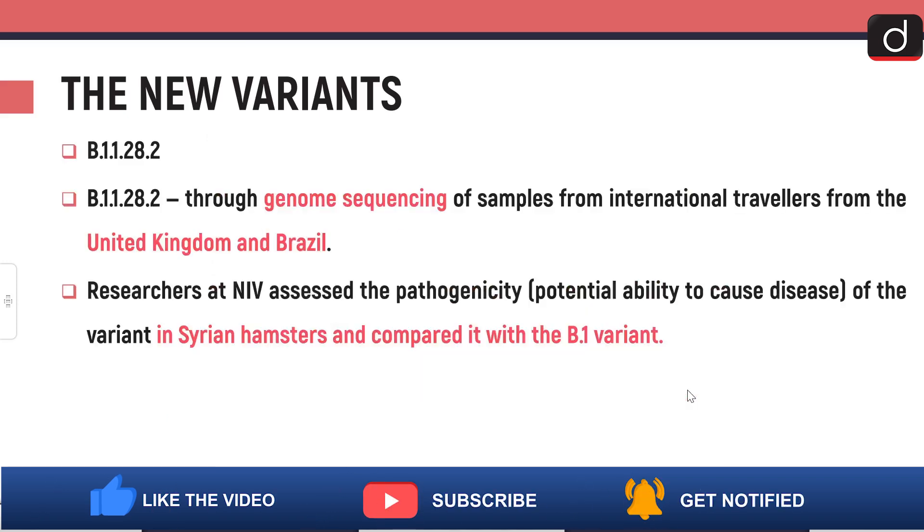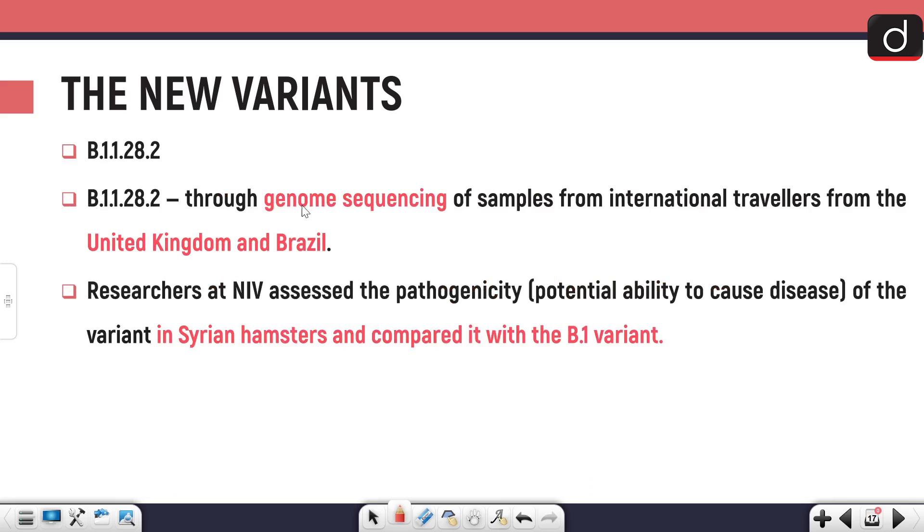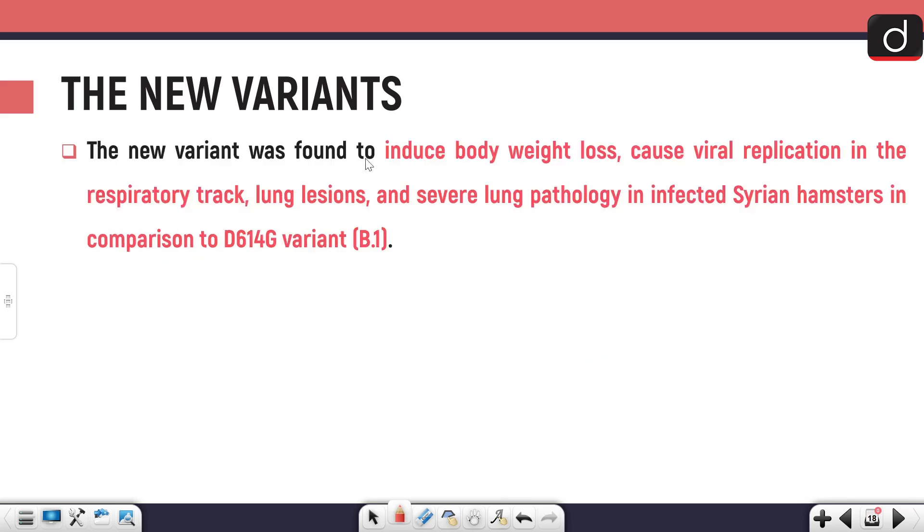B11282 was found through genome sequencing of samples from international travelers from UK and Brazil. Genome sequencing is basically to demystify the sequence of nucleic acid - the DNA, the RNA of a virus. The researchers at NIV assessed the pathogenicity, that is the potential ability to cause disease, of the variant in Syrian hamsters and compared it with the B1 variant. The new variant was found to induce body weight loss, cause viral replication in the respiratory tract, lung lesions, and severe lung pathology in infected Syrian hamsters.